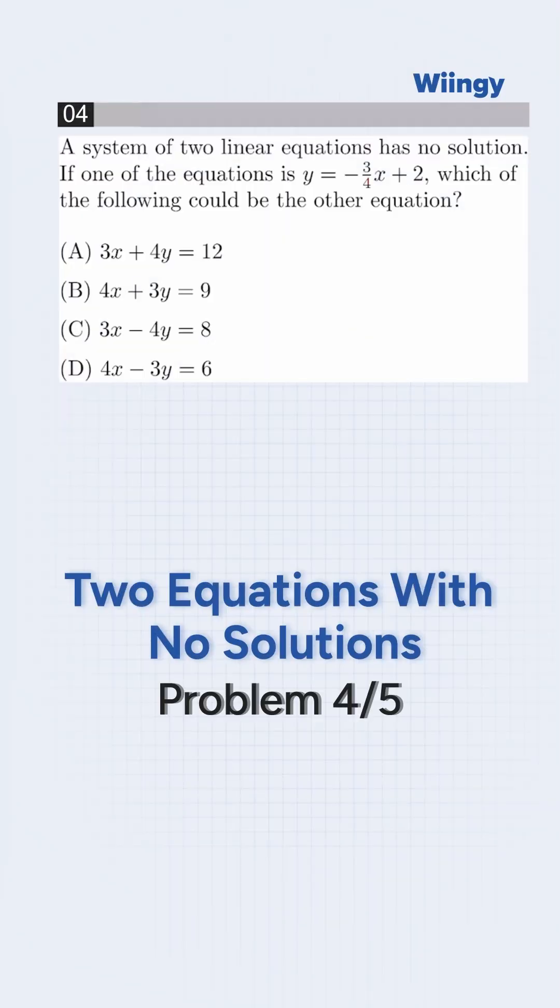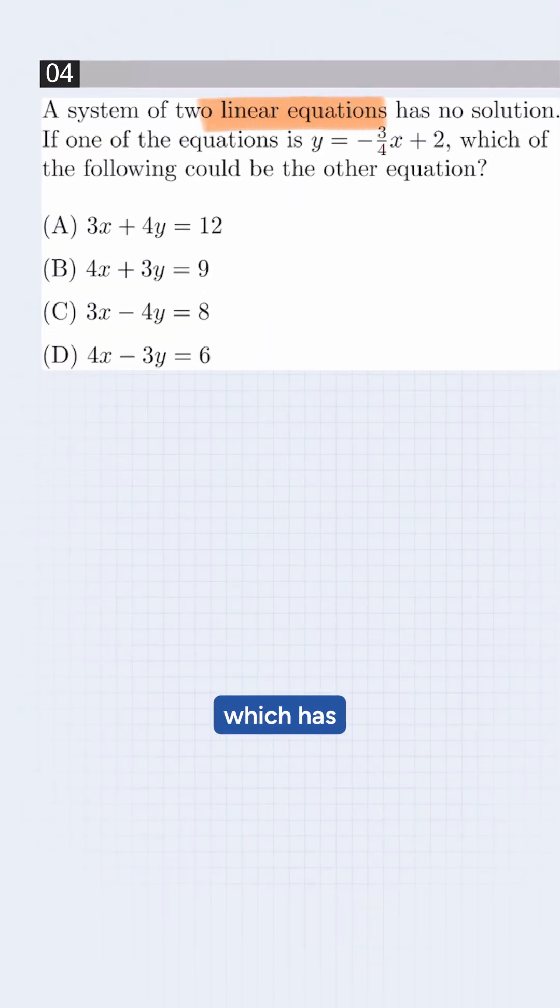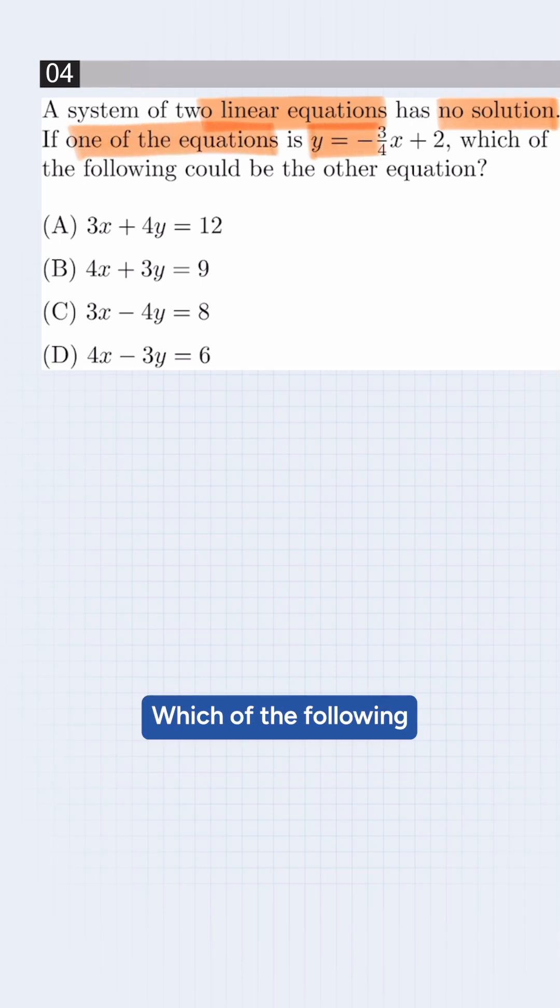Most students will be confused by the fraction, but this is easy. We have a system of two linear equations which has no solution. If one of the equations is y = -3/4x + 2, which of the following could be the other equation?